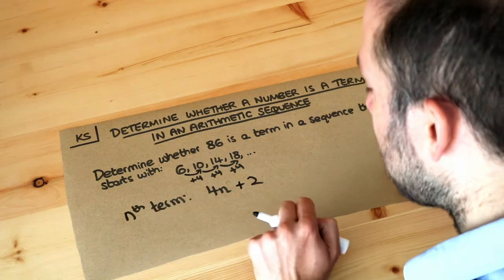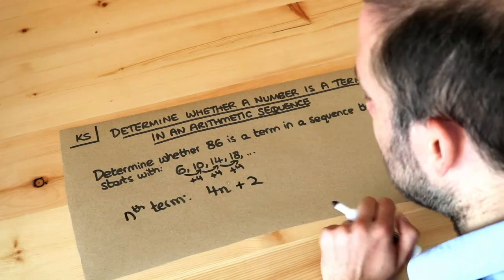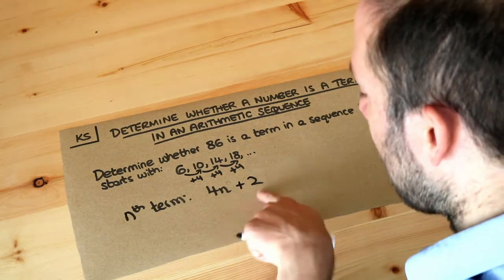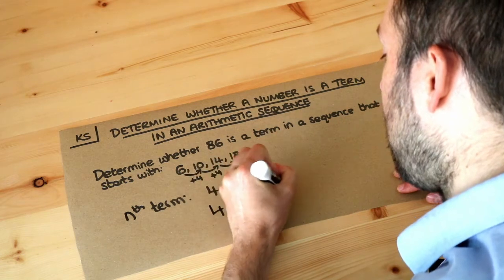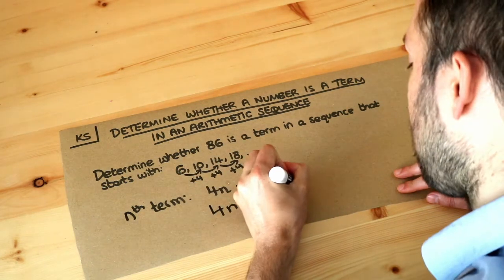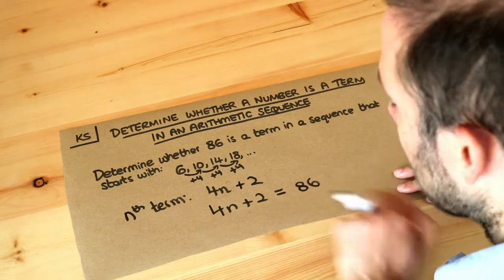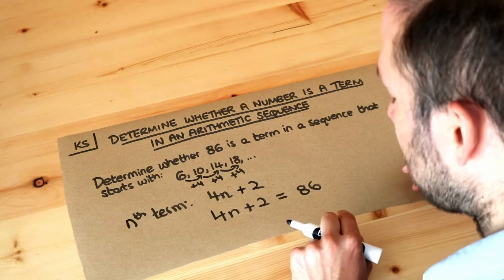Now if we know that the nth term formula is 4n plus 2, we can easily see whether 86 is a term in this sequence. What we do is we set that nth term formula equal to the 86, because what we're doing is we want to say that the nth term of our formula is 86. What is n going to be? So we can now solve this equation.